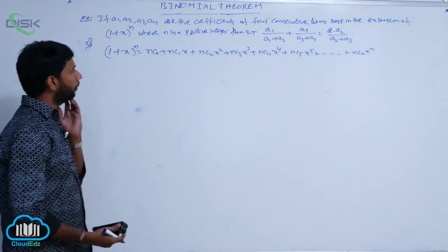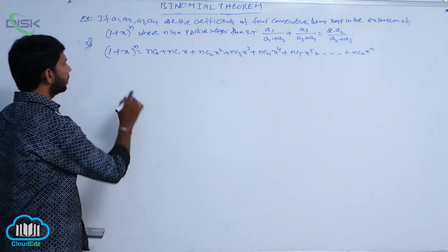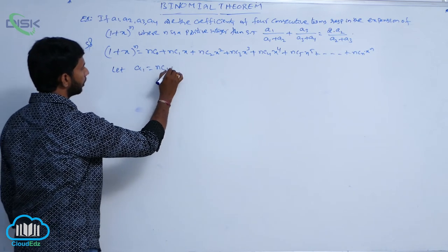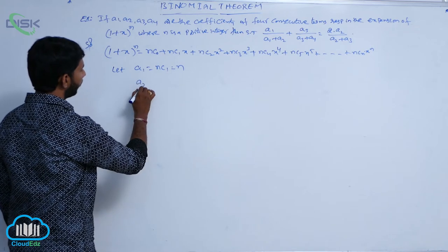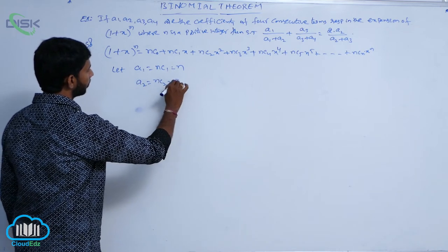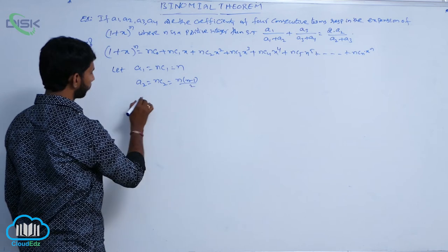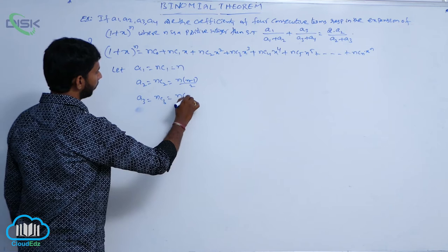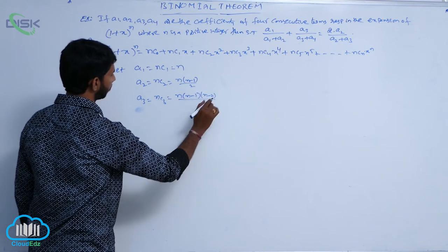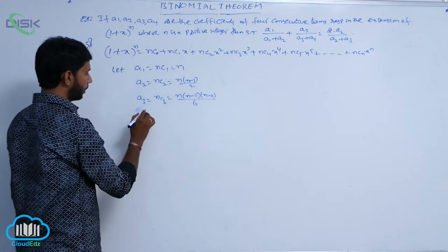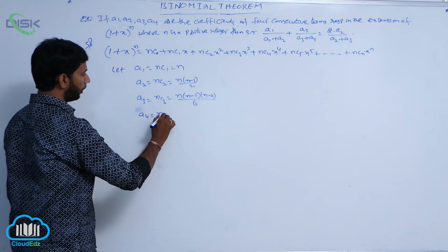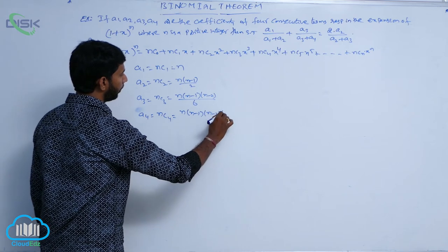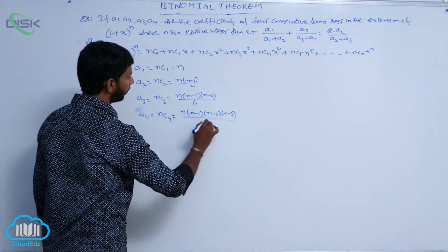Let the 4 consecutive coefficients be: a1 = nC1 = n; a2 = nC2 = n(n−1)/2; a3 = nC3 = n(n−1)(n−2)/6; and a4 = nC4 = n(n−1)(n−2)(n−3)/24.